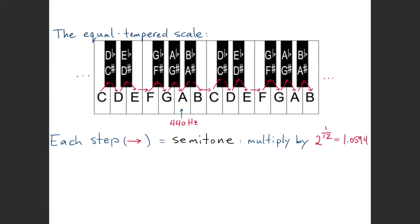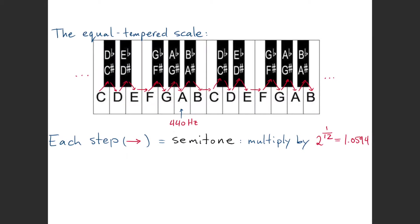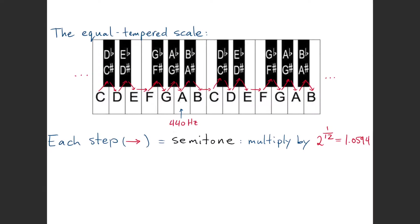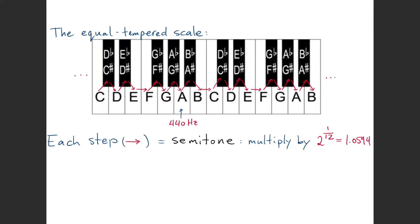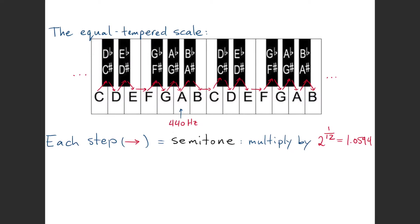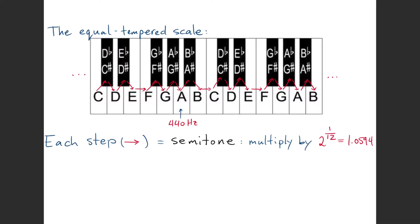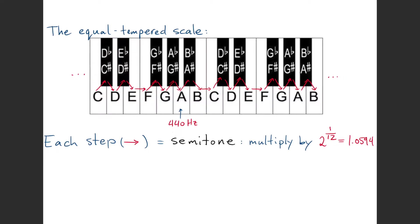Going from A to B flat, you multiply the 440 by this number. Going from B flat to B, you multiply again by that number. Every time you go up a semitone you multiply by this number.